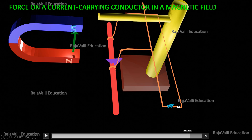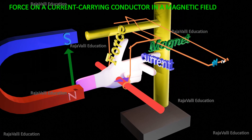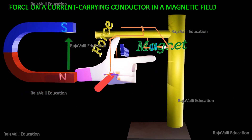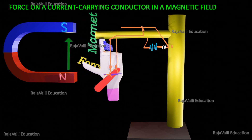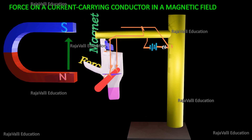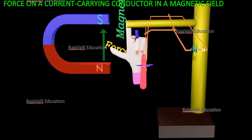We know the direction of the current and the direction of the magnetic field, so we can find out the direction of displacement of the aluminum rod. We keep our left hand with the middle finger pointing in the direction of the current and the forefinger in the direction of the magnetic field. The direction of the thumb then shows the direction of the force exerted on the aluminum rod.